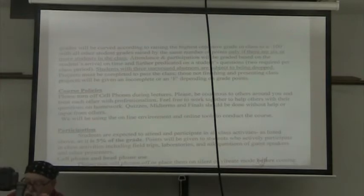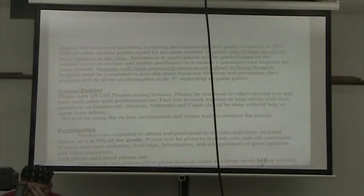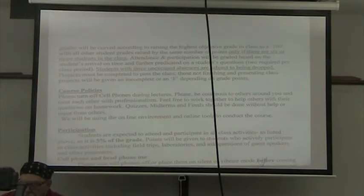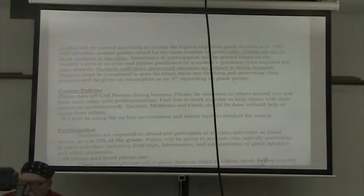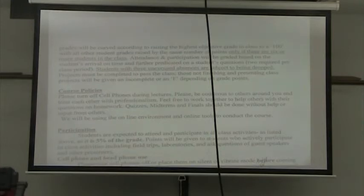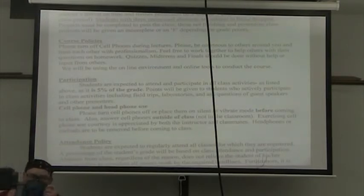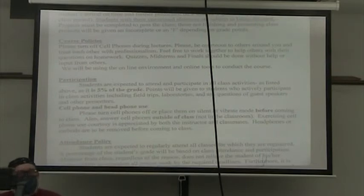Attendance and participation will be graded based on the student's arrival on time, further predicated on a student's questions — two per class period. Students with three unexcused absences are subject to being dropped. Projects must be completed to pass the class. Those not finishing and presenting class projects will be given an incomplete or an F depending on grade points. Now, the bad news is unless you can get four of your friends to sign up for class, we will not have the 6 students required for curving. Since Terrell has also signed up, but he's going to wimp out and be in Fort Defiance or some other location.